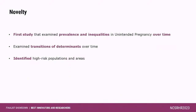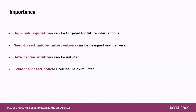This study is novel as one of its first kind to examine the prevalence and inequalities in unintended pregnancy over time, and to examine the transition of determinants over time. It identified high-risk populations and areas for need-based interventions. Since parity and spousal discordance are significant factors, we recommend that family planning programs be tailored so that husbands can be involved too.